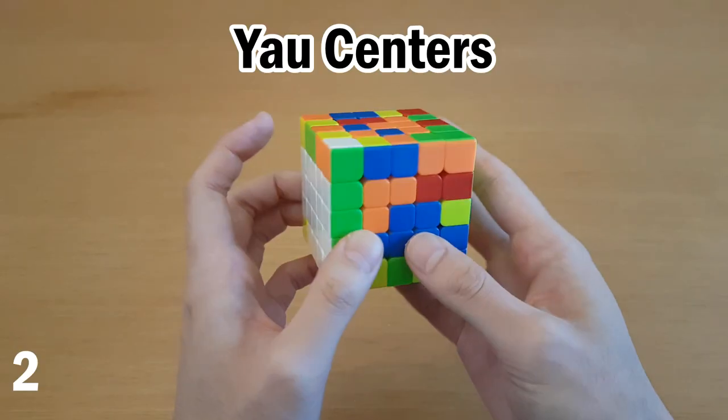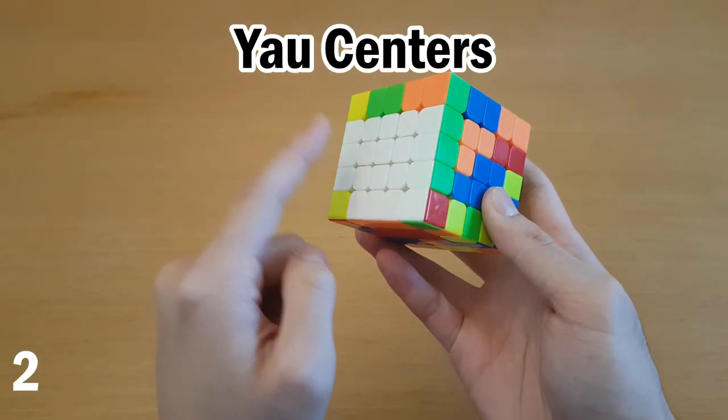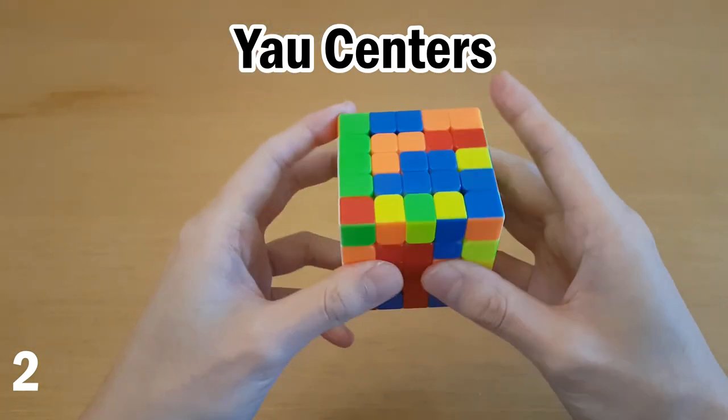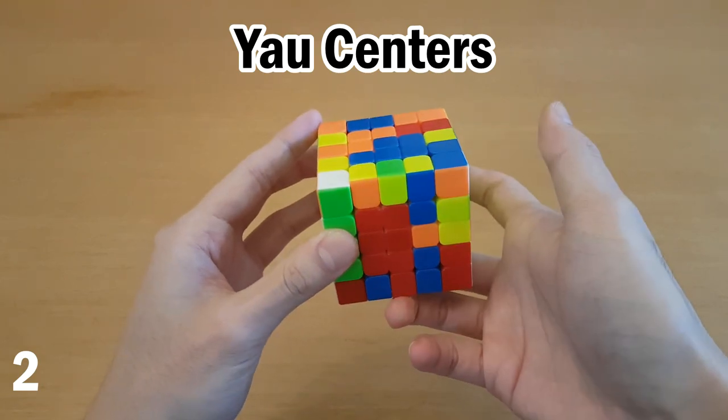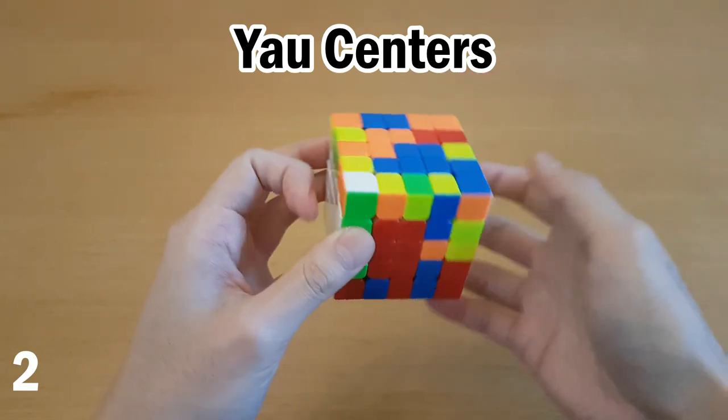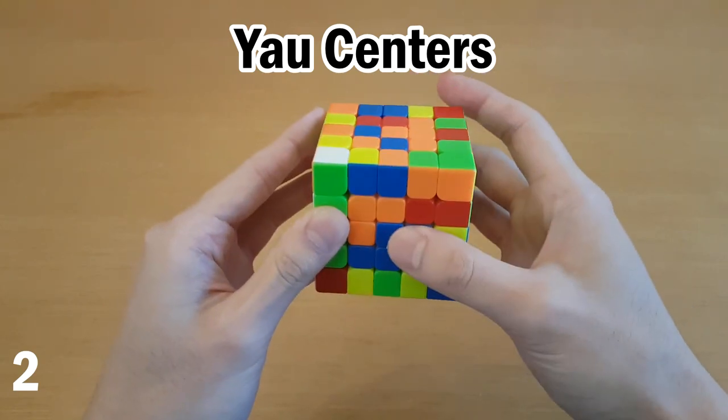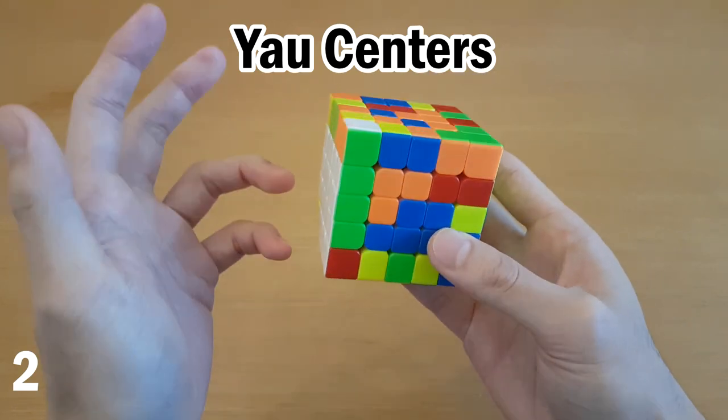Number two, minimize face switching during centers. During centers, face switching is because you have the cross here, then you can only turn the U-face. If you want to turn the front, you can't do that. Instead, you have to turn it like this in order to make it the U-face. Obviously the problem with face switching is you add extra moves trying to change which one's on the U-face, which means you want to avoid this as much as possible.